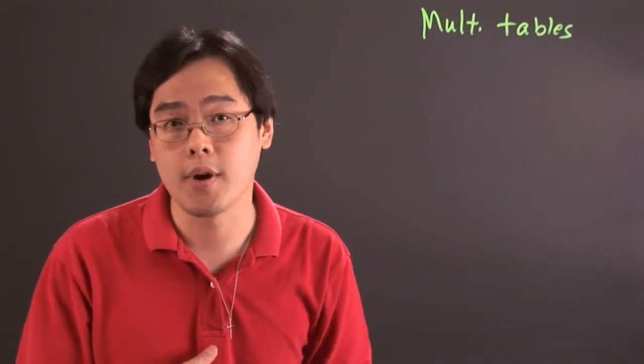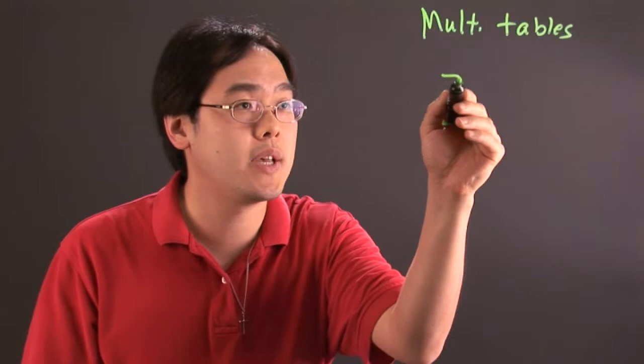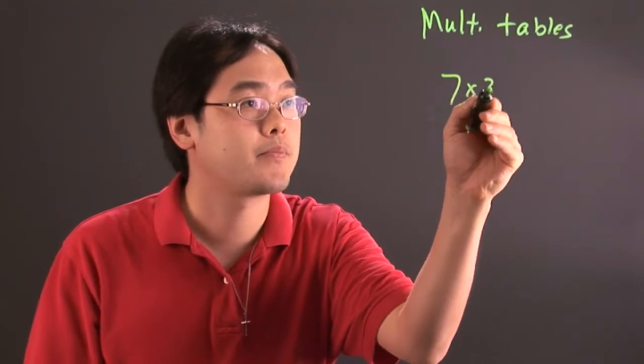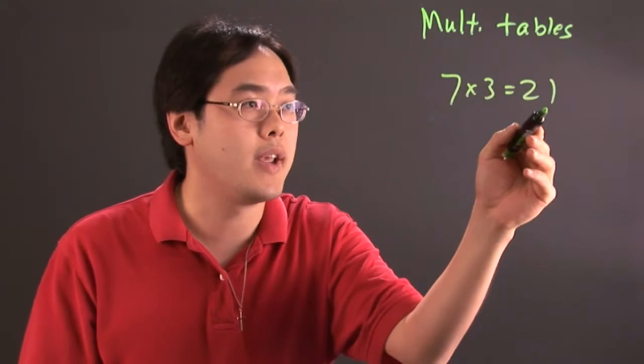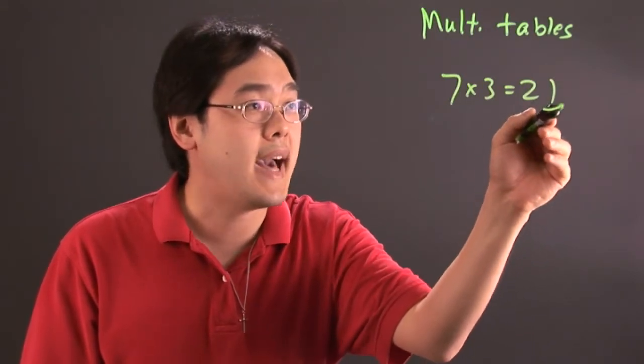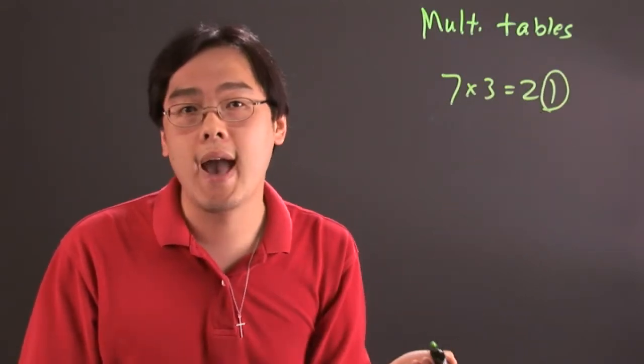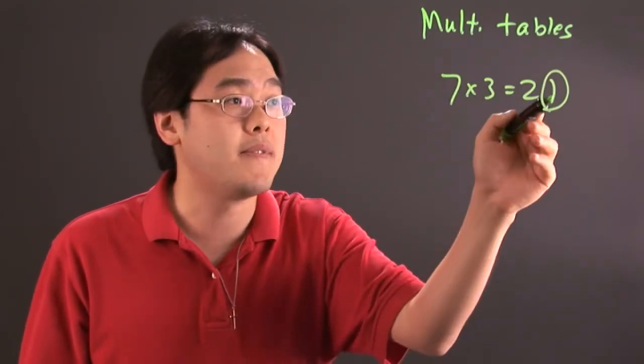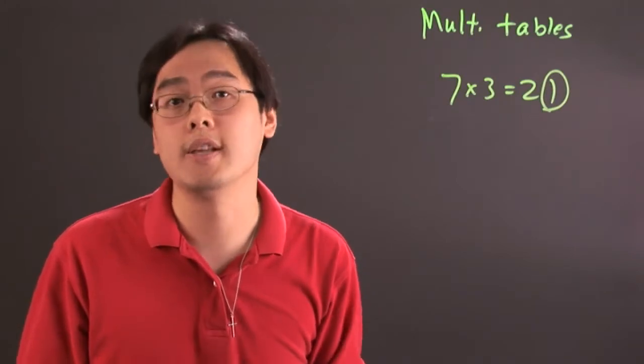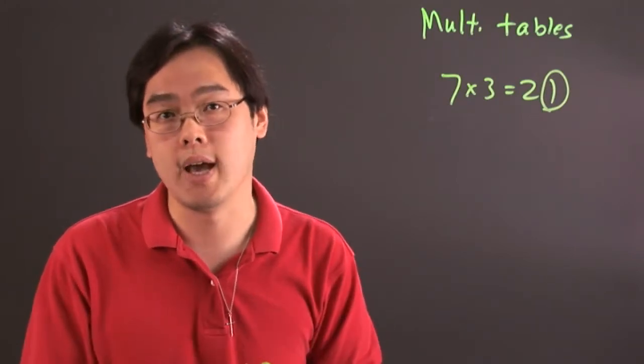Now, there's a few other tips out there that I can throw out there. For example, if you know 7 times 3 equals 21, the important part here is the last digit. Because if you have any number that ends with a 7 and you multiply any number that ends with a 3, you know that the very end is going to end with a 1. It's just a matter of being able to multiply from there.